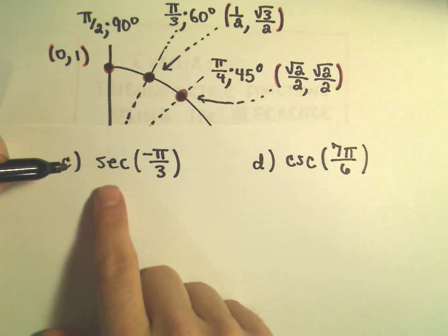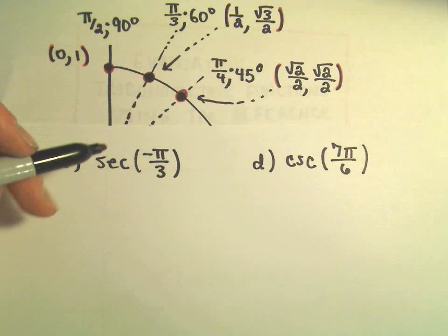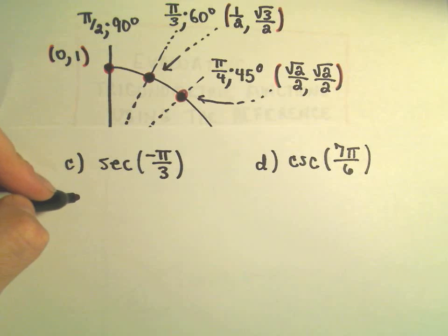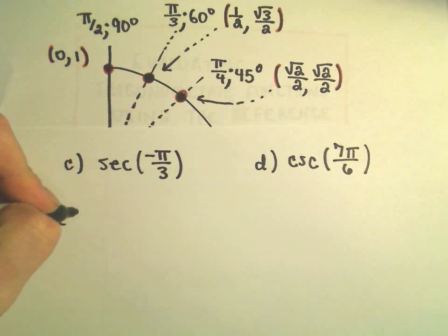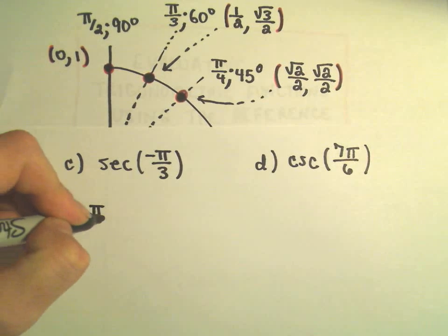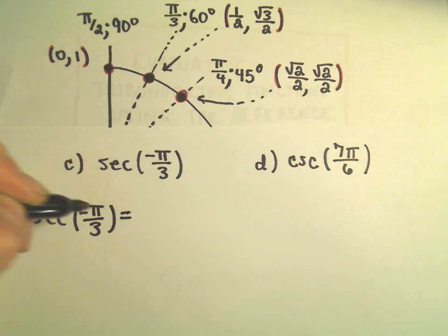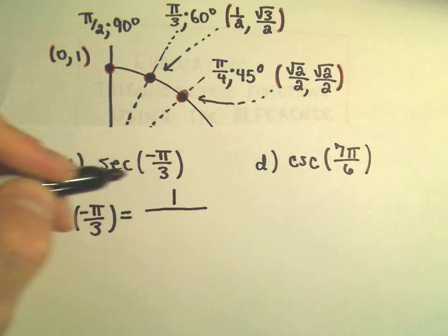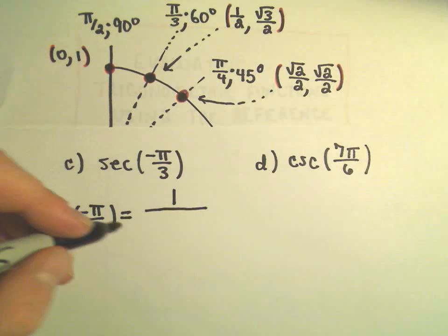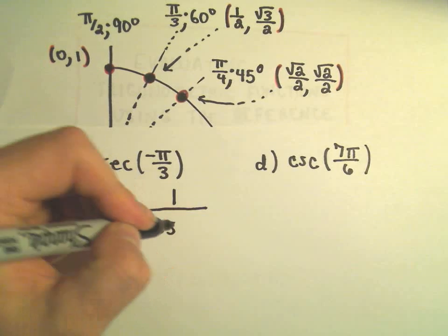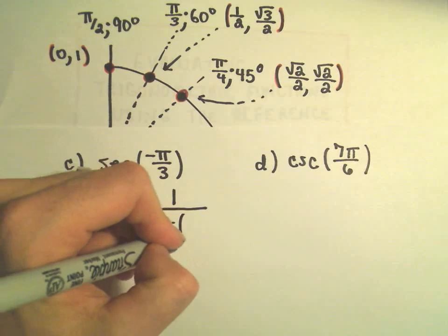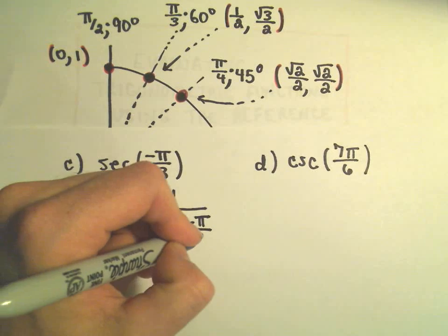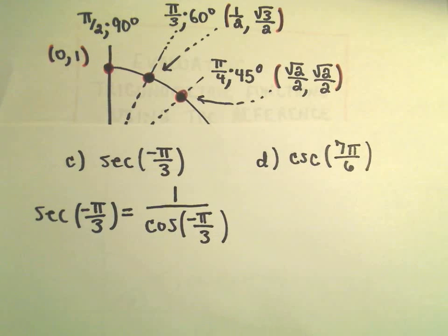The first thing I really do — everything to me really goes back to sine and cosine. To figure out secant of negative pi over 3, what is the definition of secant? Secant can be defined to be 1 over cosine. So that means secant of negative pi over 3 is going to be the same thing as 1 over cosine of negative pi over 3.